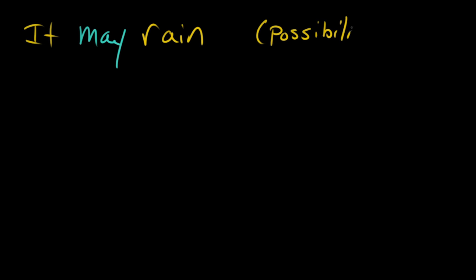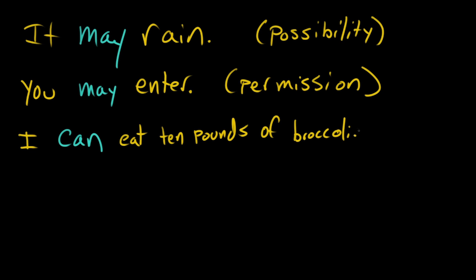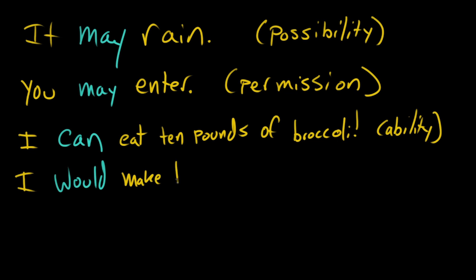Similarly, with 'may,' we can use it to express a possibility — like saying 'it may rain,' something that could possibly happen — or to give someone permission, like 'you may enter.' You can also use a word like 'can' to express ability. You could say, 'I can eat 10 pounds of broccoli,' expressing your ability to do a thing. We also use modal verbs to talk about conditions or stuff that isn't going to happen or maybe could happen. For example, in this sentence we would say, 'I would make the bed, but I'm tired.'